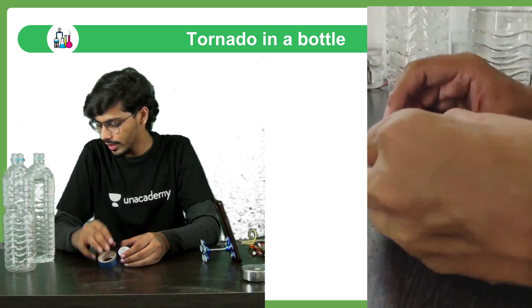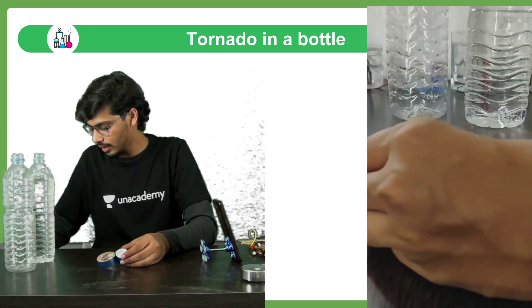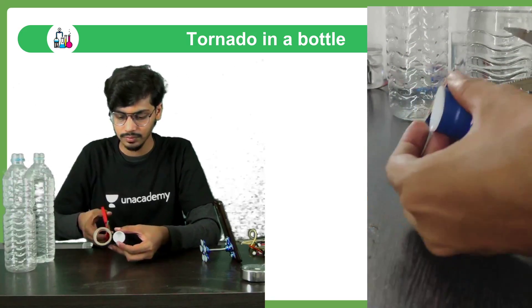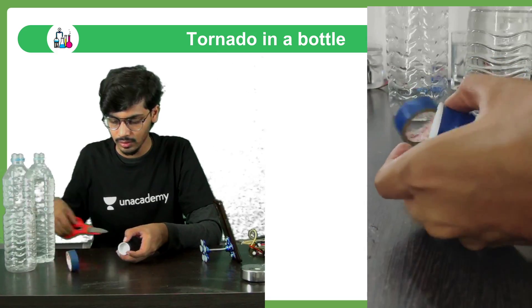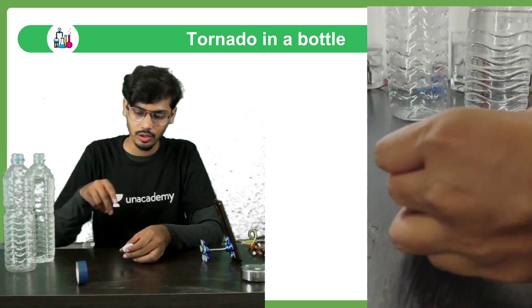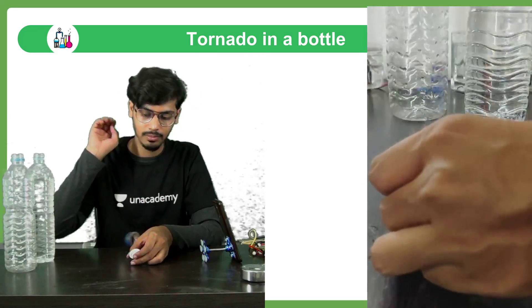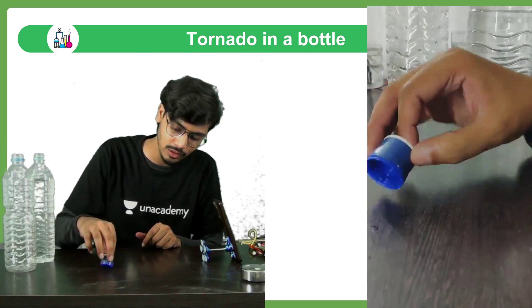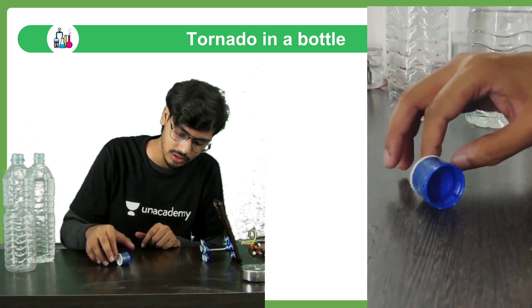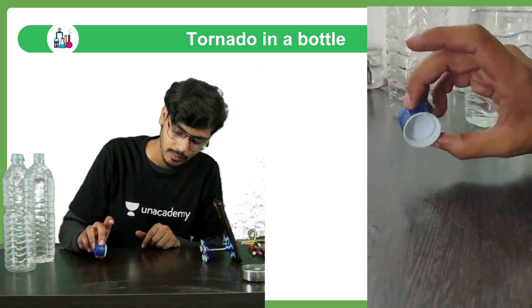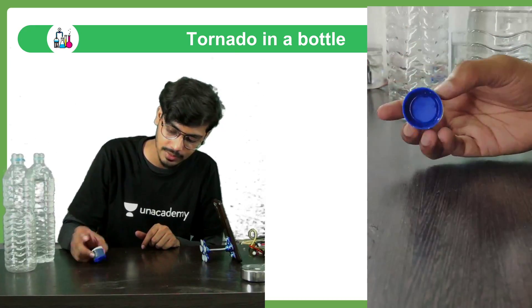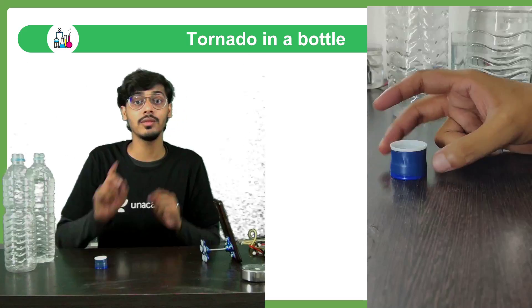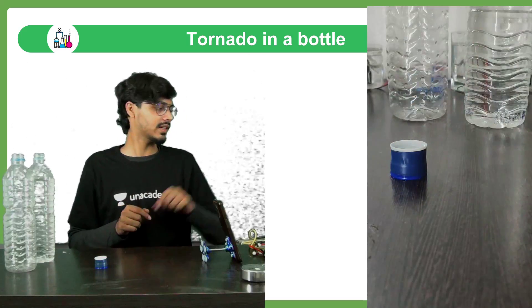We have to put the electric tape and cut it. Now you can see how the connector looks — it is just two caps held together with the help of electric tape.